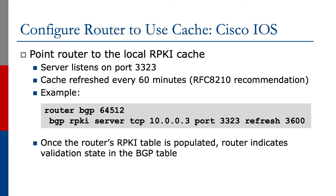To configure the router to use the cache, I've shown an example using Cisco IOS. We point the router to the local RPKI cache, make the server listen on port 3323, which is one of the common ports used, and have the cache refreshed every 60 minutes. This means the router will update its local validation table from the cache every 60 minutes.